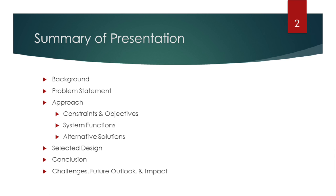Before we start, let's summarize what we're going to talk about today. We'll begin with the background - what problem we're looking at - then go into the problem statement we developed. We'll look at the approach we took in selecting a product to develop, then go into detail about our final selected design. We'll then summarize everything, talk about challenges we faced, the future outlook of the project, and the impact it can make.